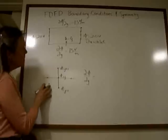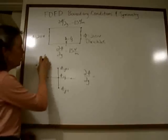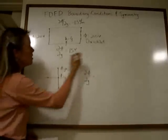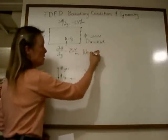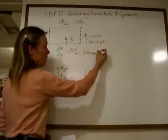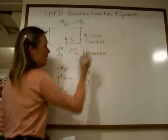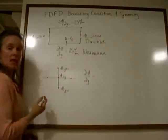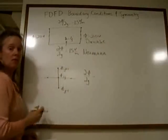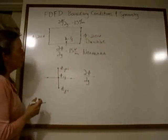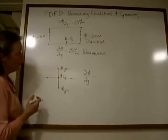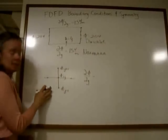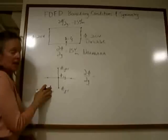The top and bottom boundary conditions need to be handled a little bit differently. These boundary conditions are called Neumann boundary conditions, and they represent the derivative of the potential being set at the boundary.